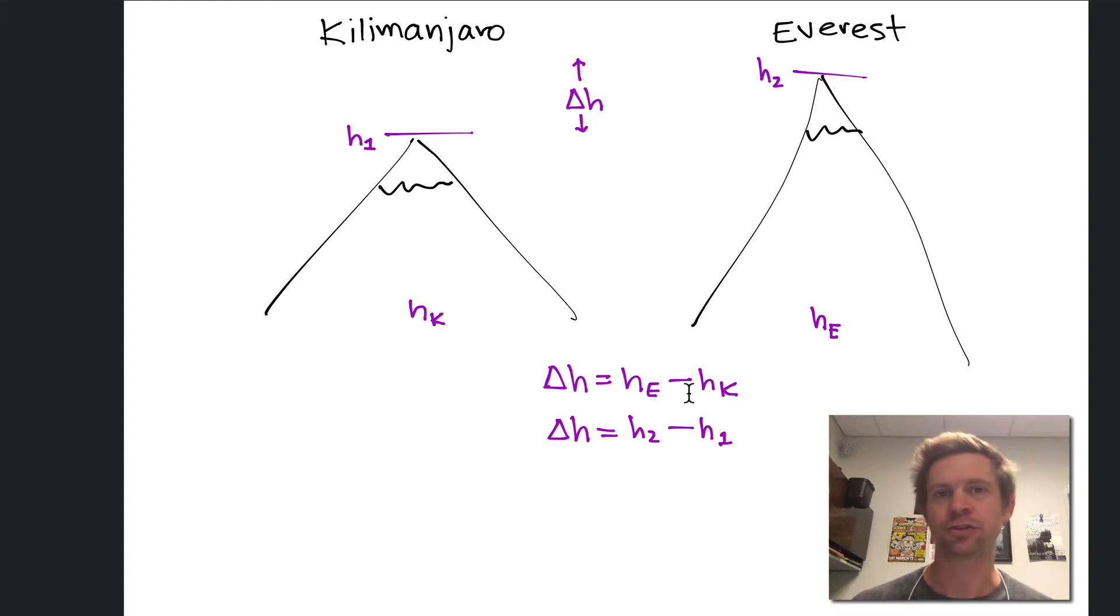The change in the value of a state function as a process takes place doesn't depend on the intricate details of the process, only on the nature of the initial and final states. We've seen this conceptually in the climbing a mountain example.